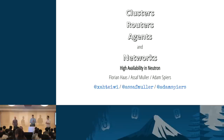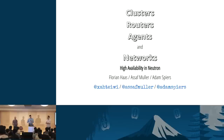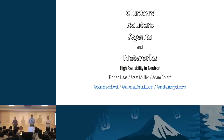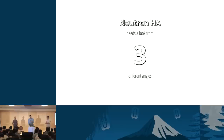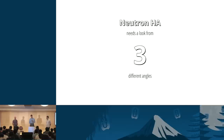We're concerning ourselves in this talk — which is in the networking track — with high availability in one specific area of OpenStack: OpenStack networking, aka Neutron. We generally want high availability in any aspect of an OpenStack deployment. When we talk about Neutron HA specifically, we need to look at it from not one, not two, but three different angles or perspectives.